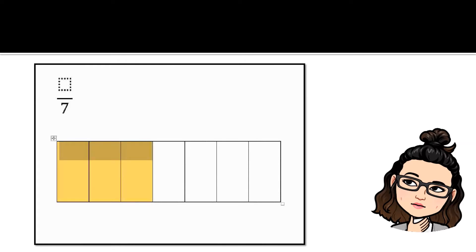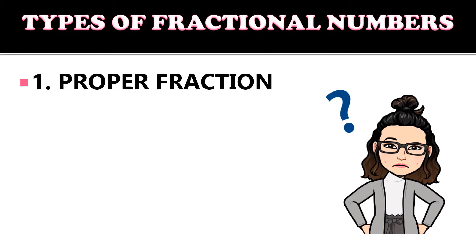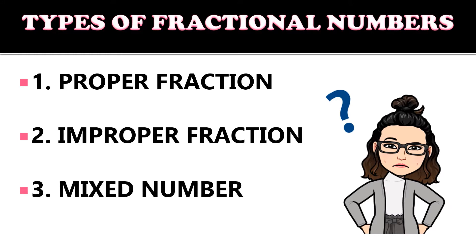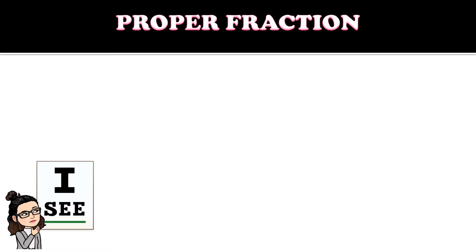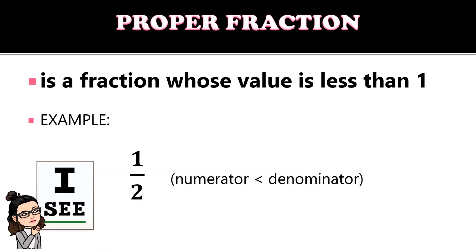The numerator represents the number of parts we have taken from the whole. There are three types of fractional numbers: proper fraction, improper fraction, and mixed number. A proper fraction is a fraction whose value is less than one — for example, one-half — where the numerator is less than the denominator.